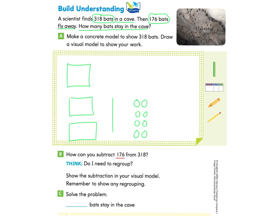So let's take a look first at the ones column. We see that there are six ones in 176 that we need to take away or subtract from 318. So we're going to go over to the ones column and we're going to cross out six. Let's do that now. Great, we've crossed out six.